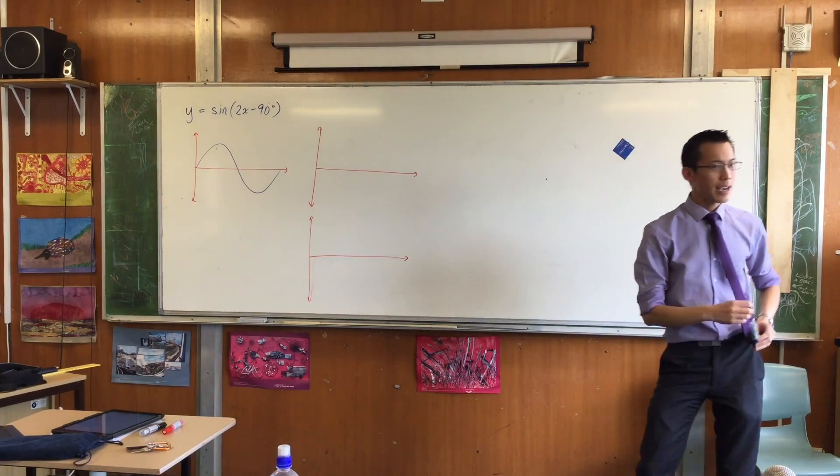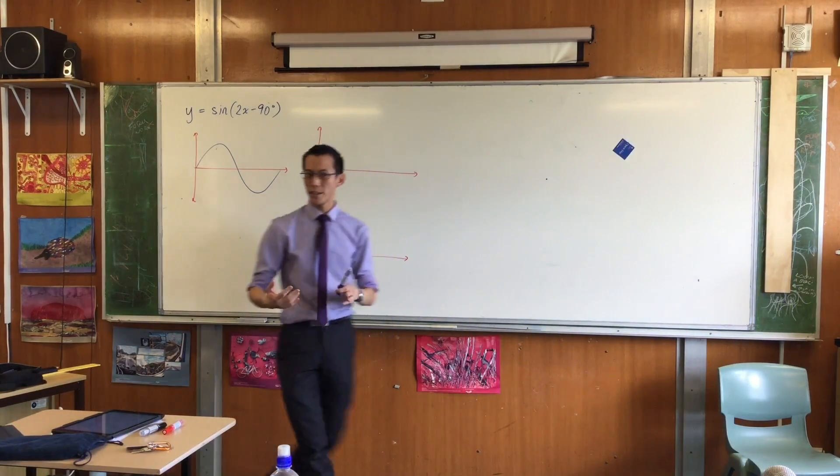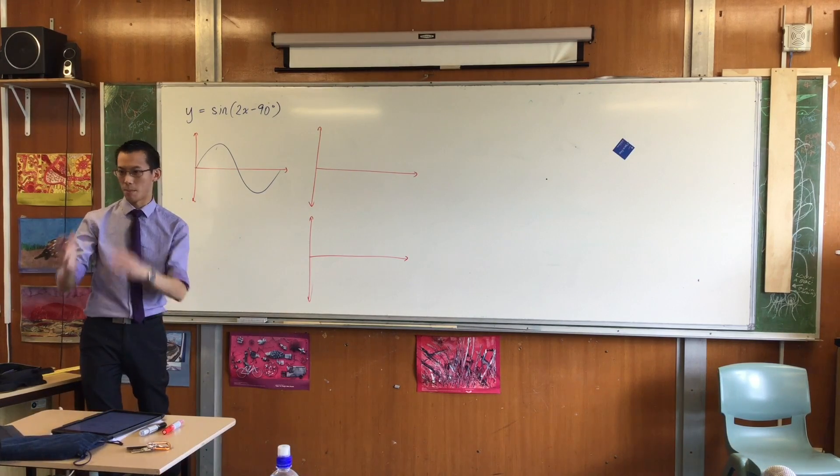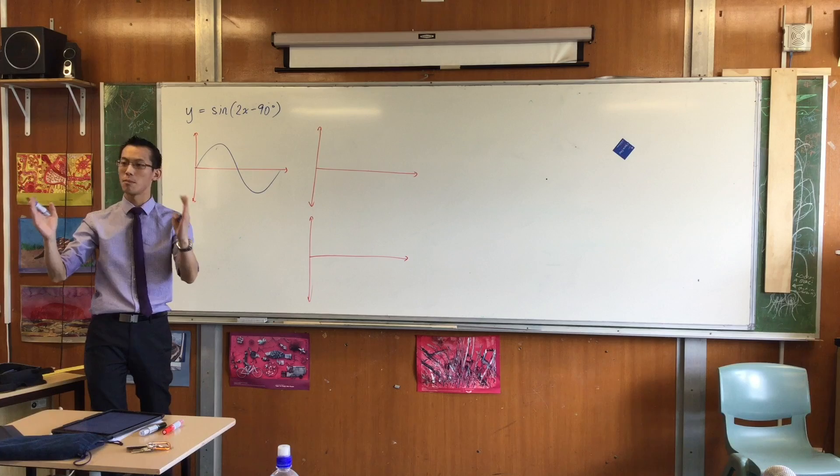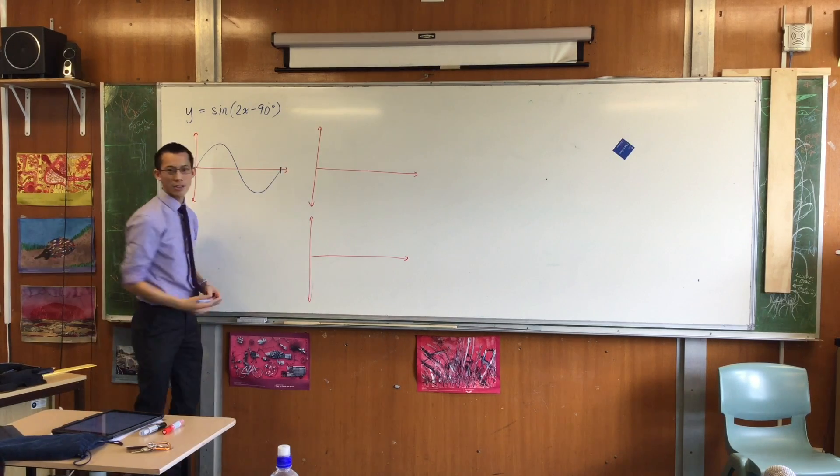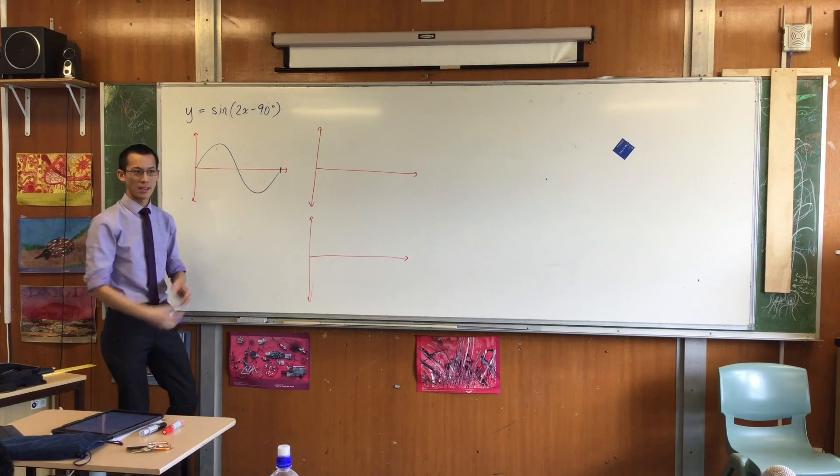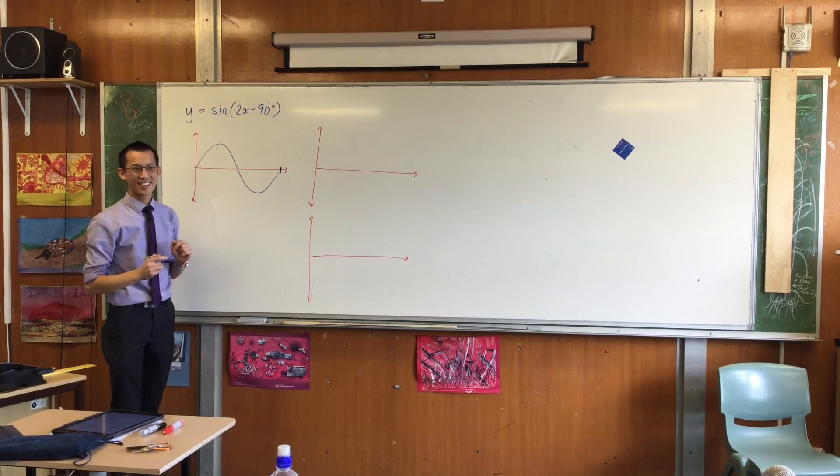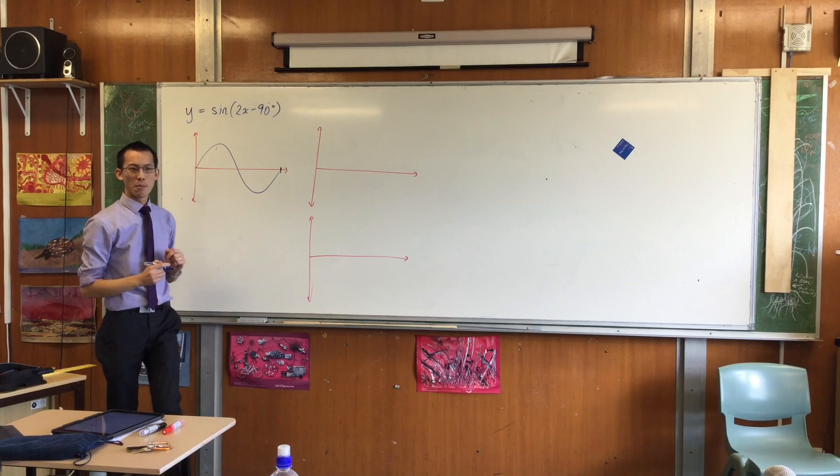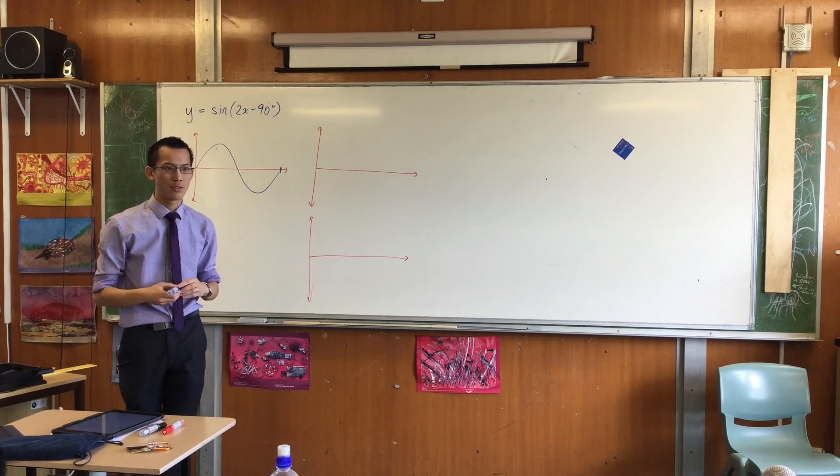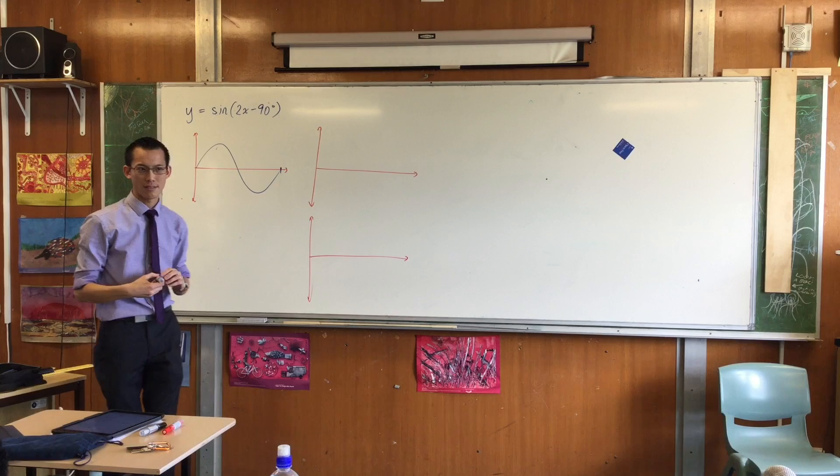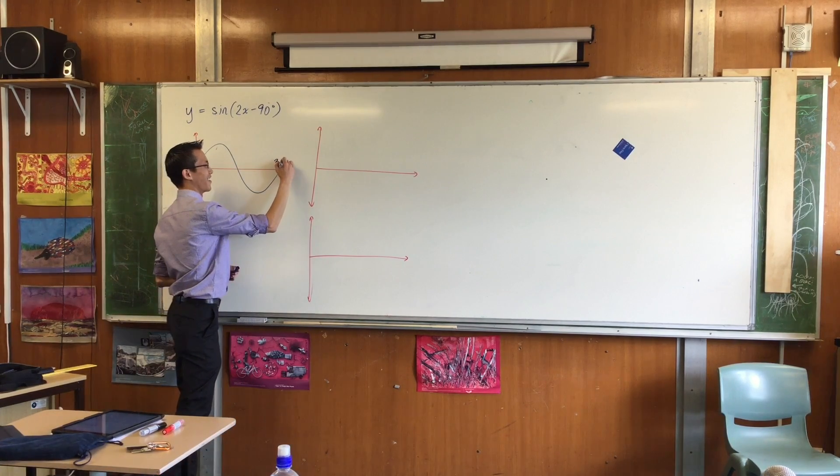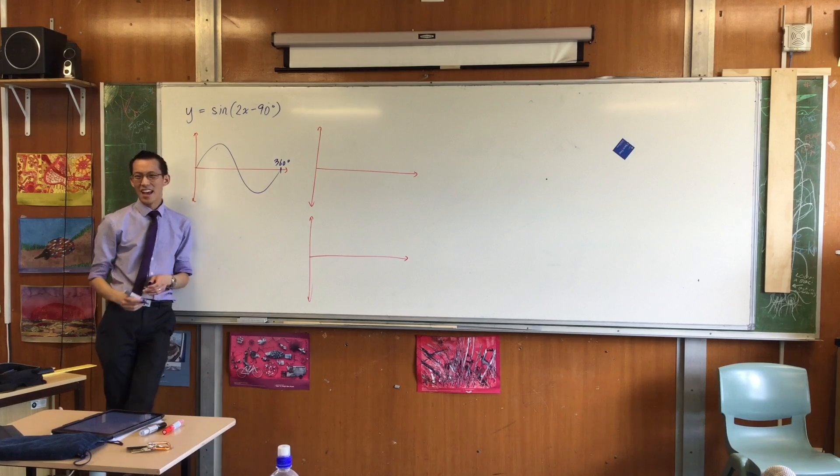Now, here's our regular sine curve. I've drawn it from 0 to 360. And the reason why 0 to 360 is such a common domain to choose is because that means, ta-da, you get to the end of the period. This is also called one full cycle of the graph.